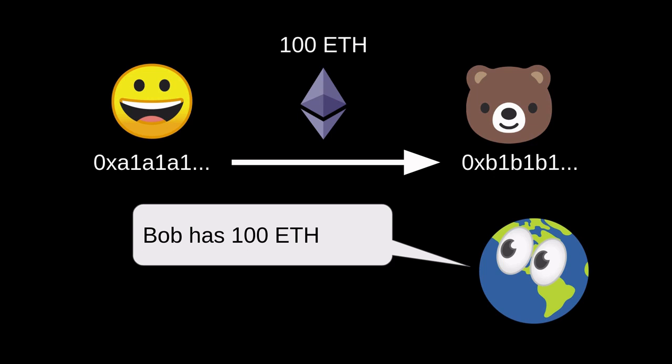Likewise, if this receiver address belongs to Bob, then everyone in the whole world knows that Bob now has 100 Ether. So how does Tornado Cash protect privacy? How is it able to hide the link from the sender to the receiver?